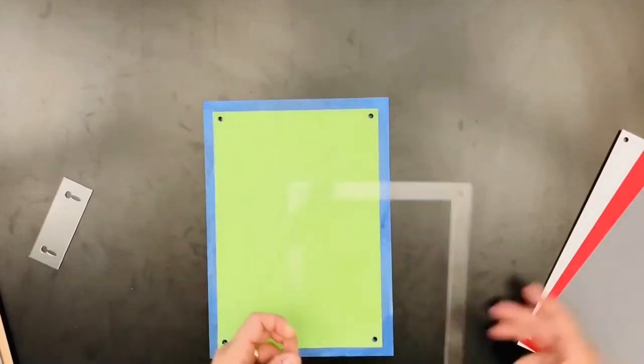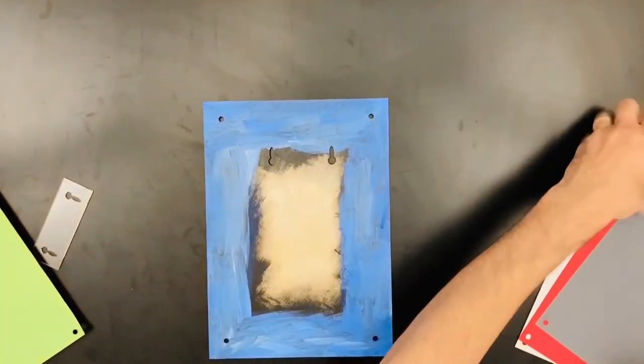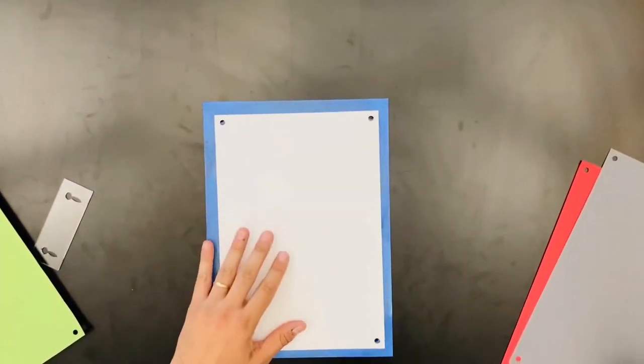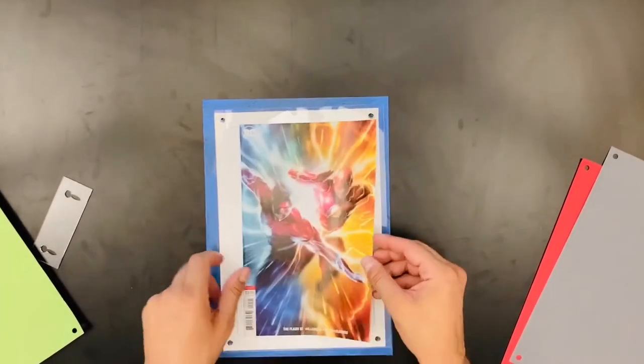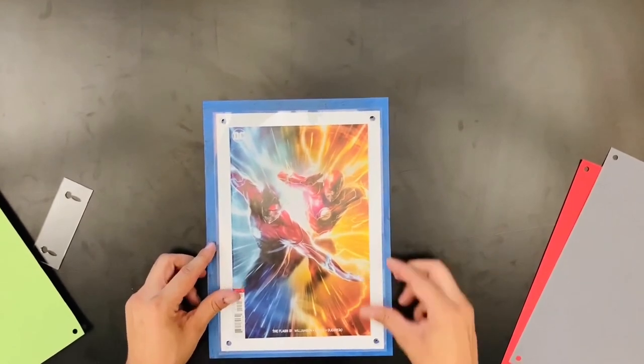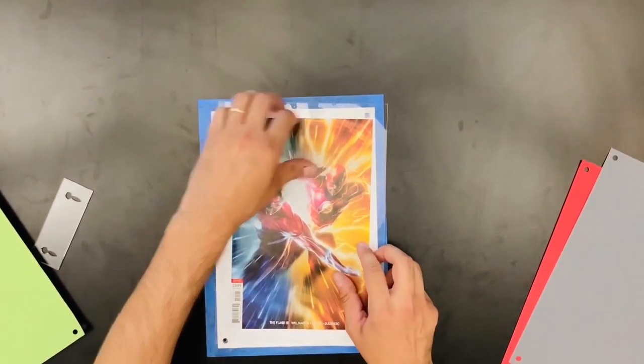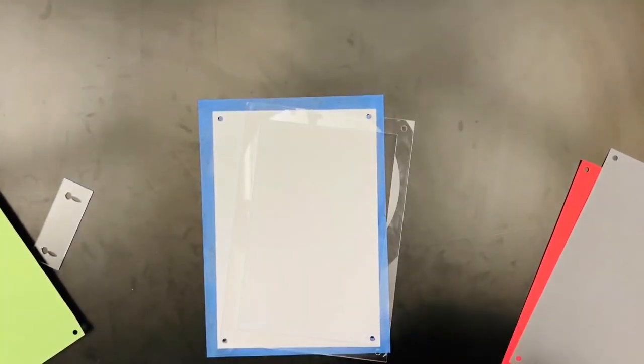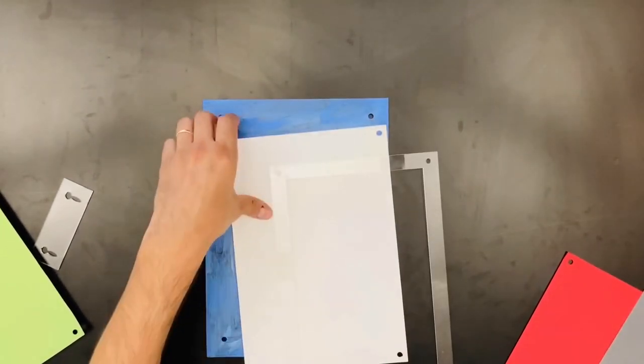Maybe I swap that out. Let's go with a white instead. White for very vibrant colors can really make the cover stand out. So here we got this Matina Flash variant - super cool. Makes it look like they're jumping out of the speed force right out of that frame.